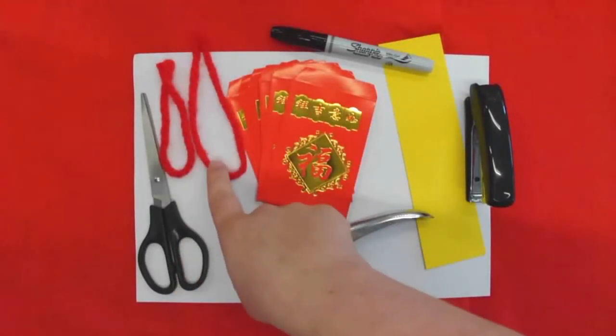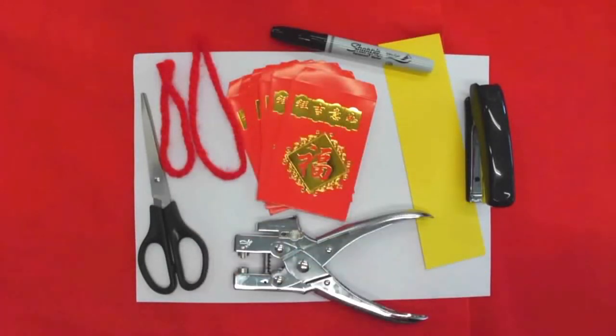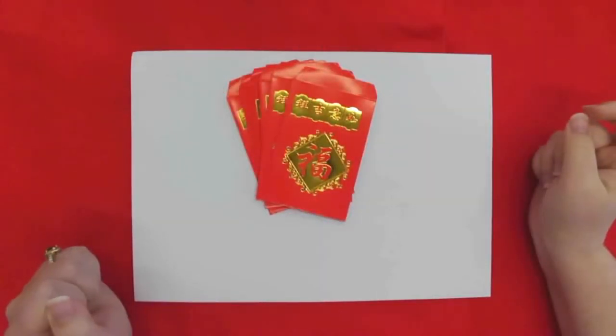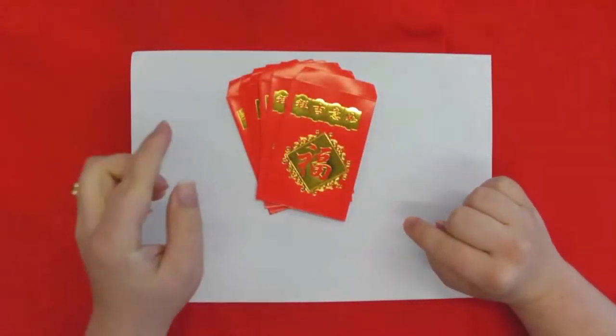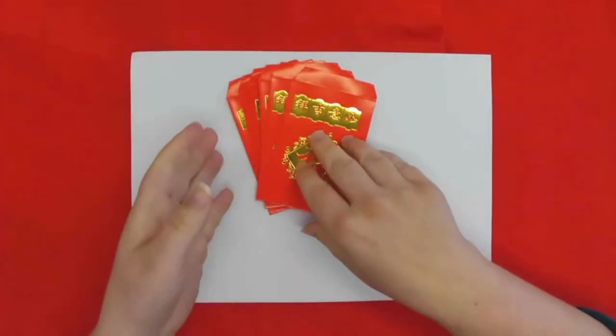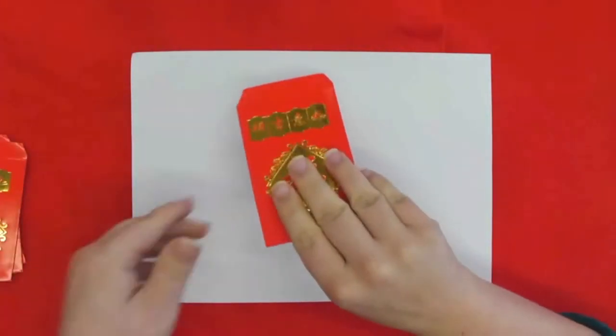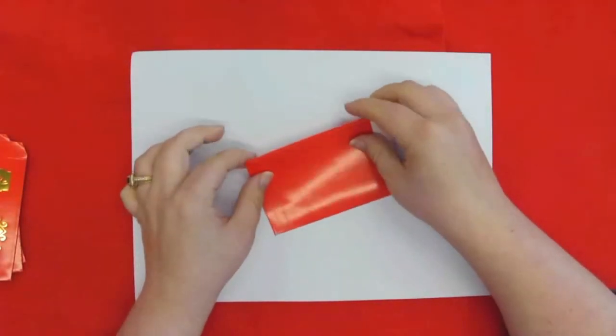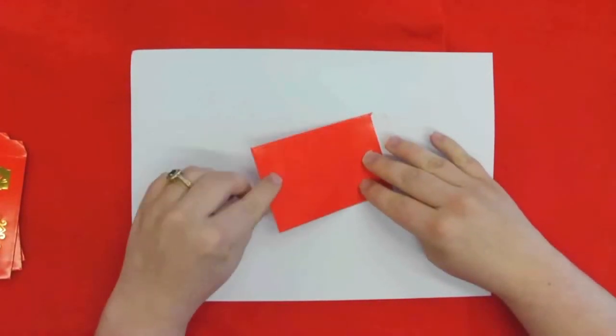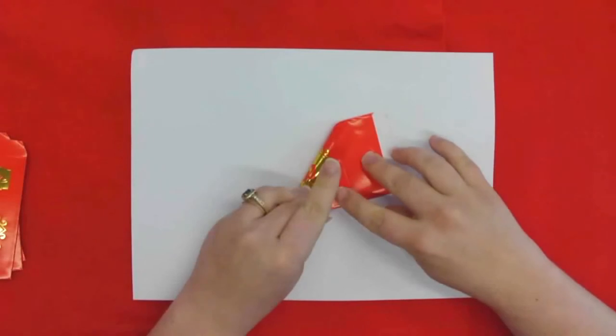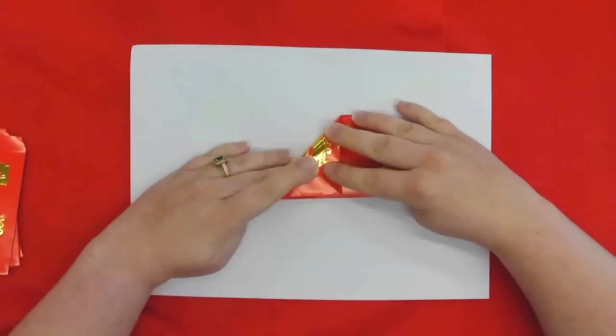So we're going to start with lai see packets. Take the first one, flip it over, and you are going to bring one corner and fold it over to the other side so it creates a triangle shape.